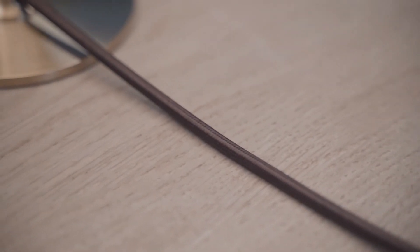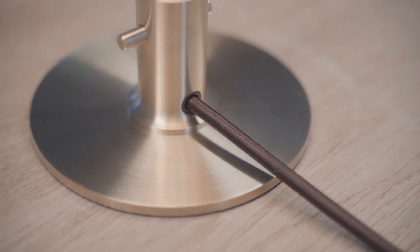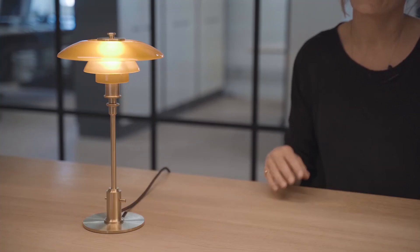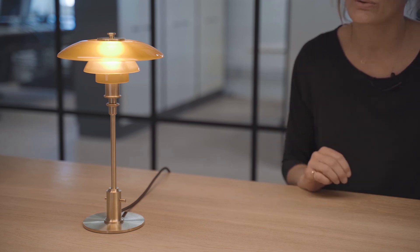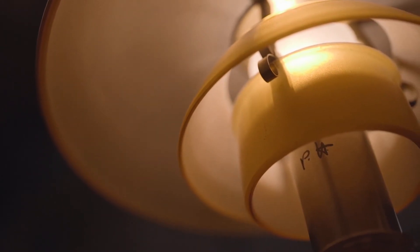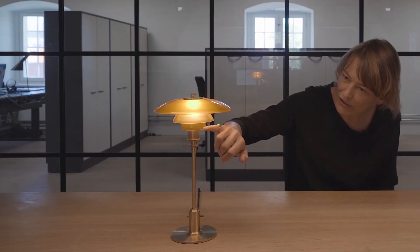The brown textile cord really complements the exclusivity of the design, and it also sends references back to the textile cords on the early PH lamps. Paul Henningsen's initials are beautifully engraved beneath the lower shade, and it's a discreet applaud to the master of light himself.